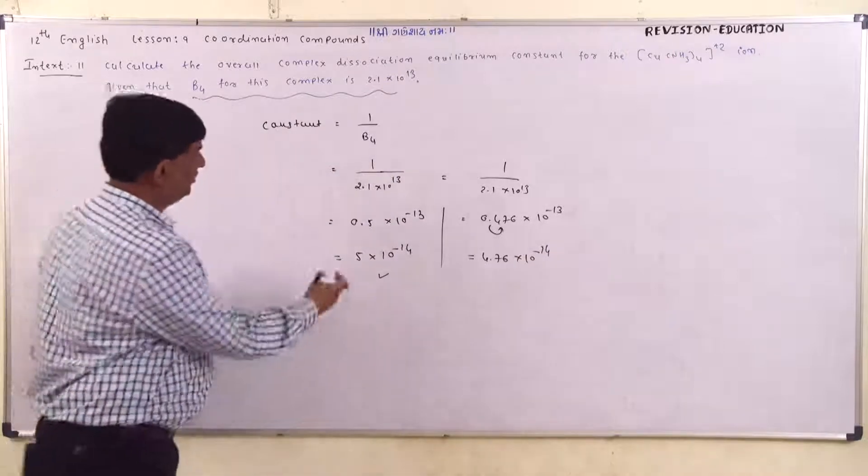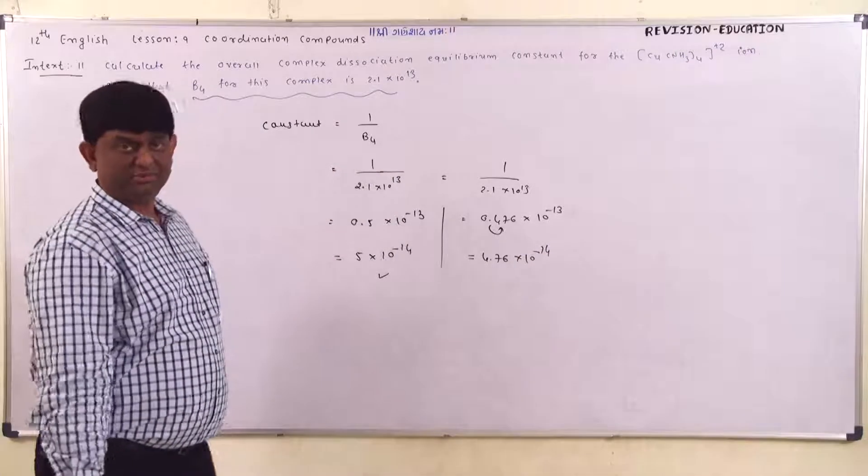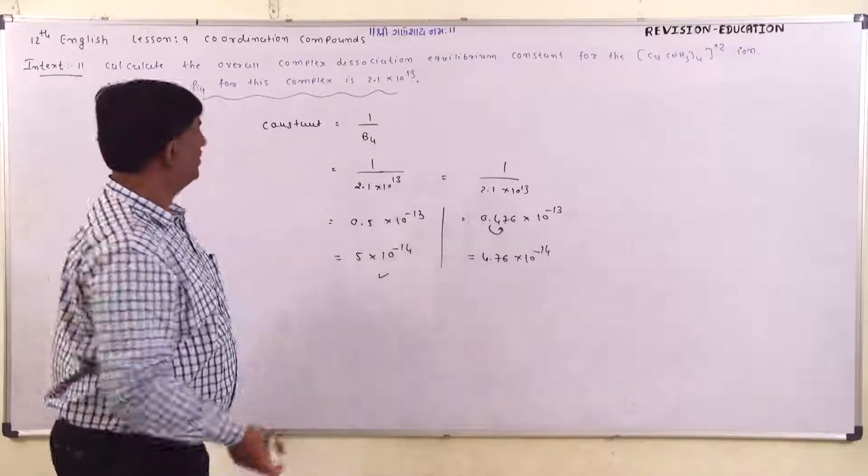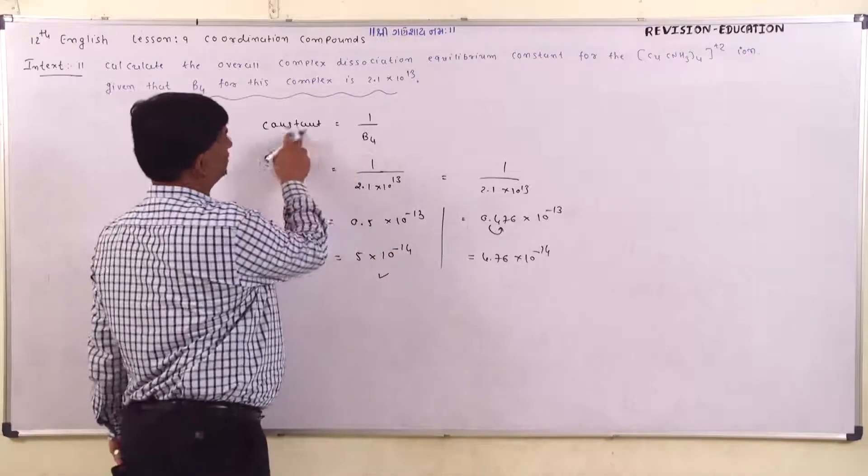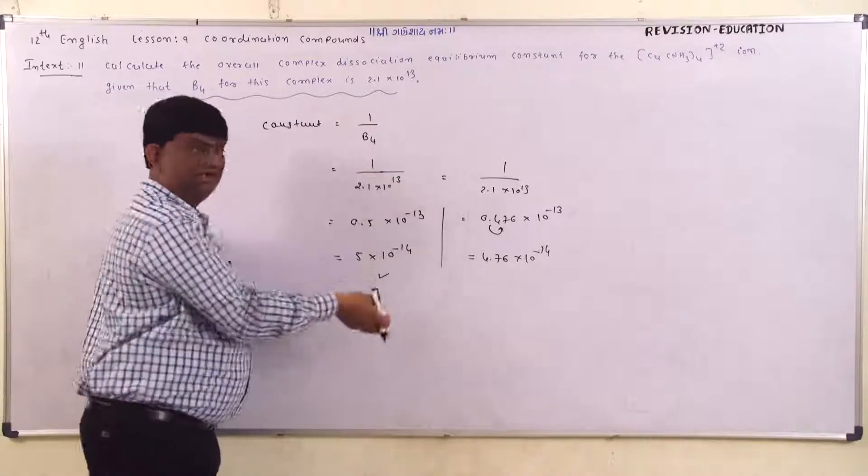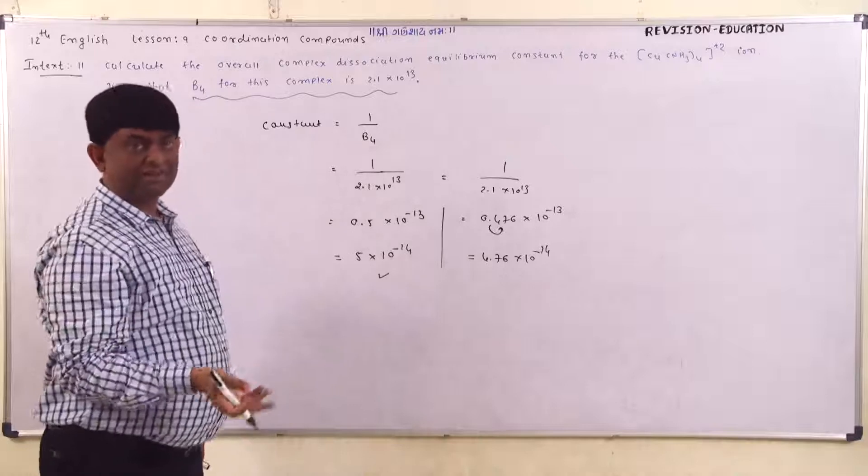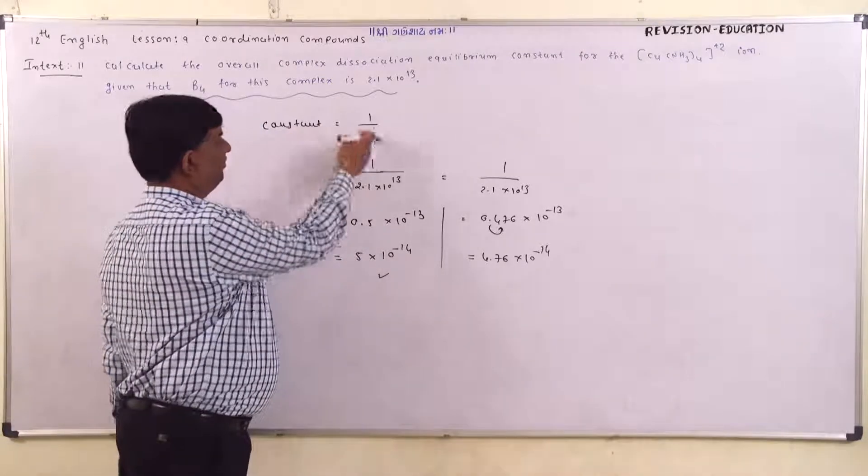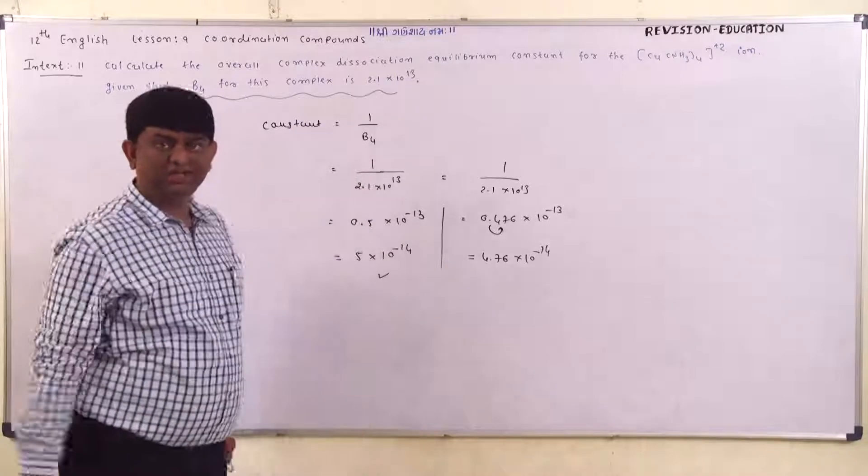So for this type of question, if the dissociation constant is asked, you use Kd = 1/β₄. If β₄ (formation constant) is asked, you do the reverse. It's a very simple numerical formula and you can get your answer.